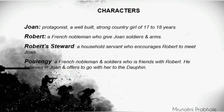Robert de Baudricourt is a French nobleman who gives Joan soldiers and arms so that she can travel to the Dauphin. The third character is Robert's steward - a household servant who encourages Robert to meet with Joan. The last character is Poulengey, whose real name is Bertrand de Poulengey. He is a French nobleman and soldier who is a friend of Robert, believes in Joan, and offers to go with her to the Dauphin.